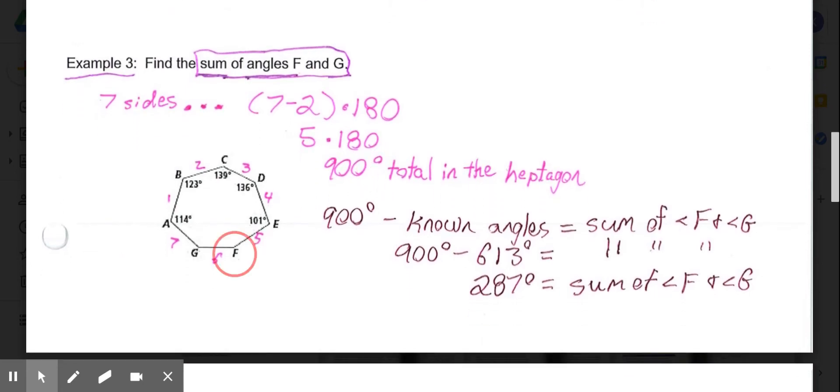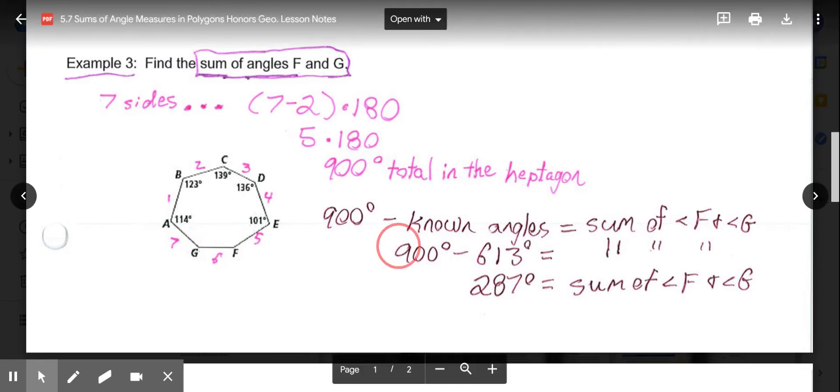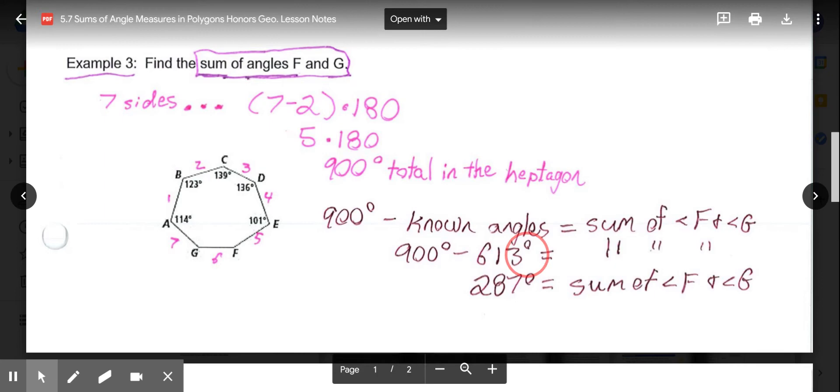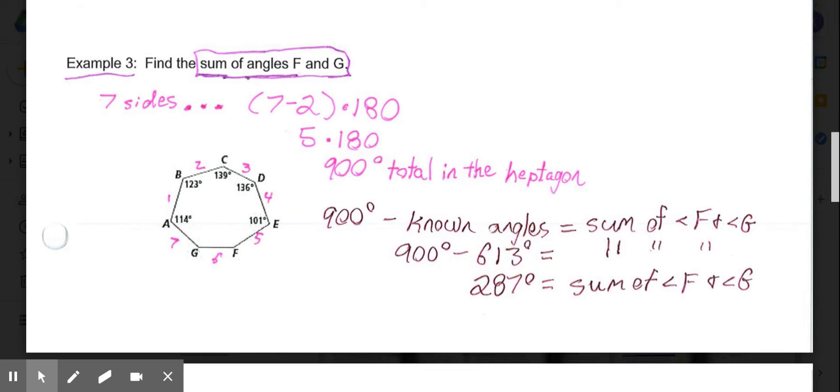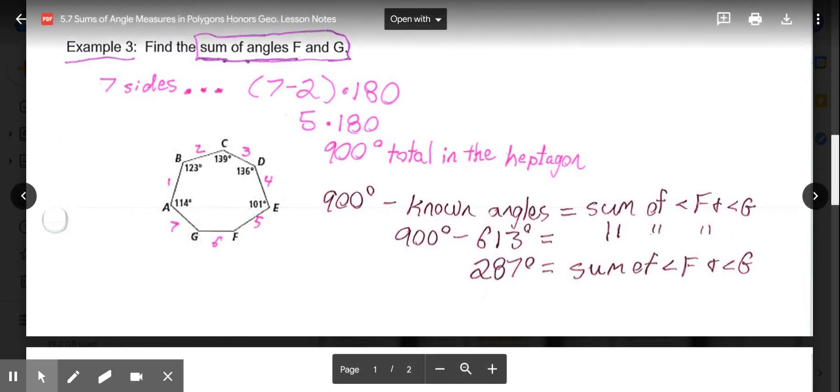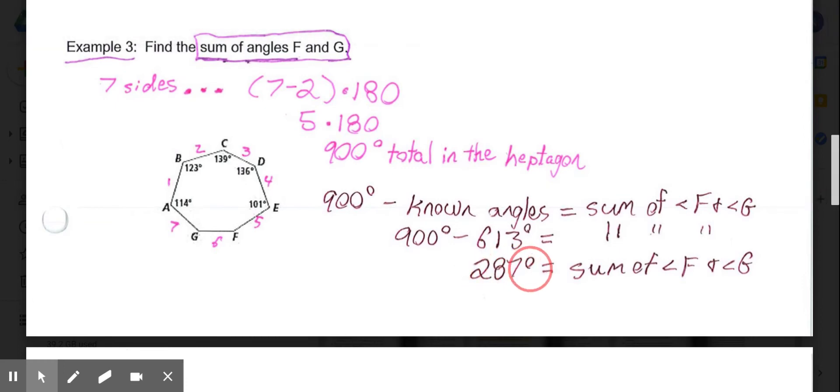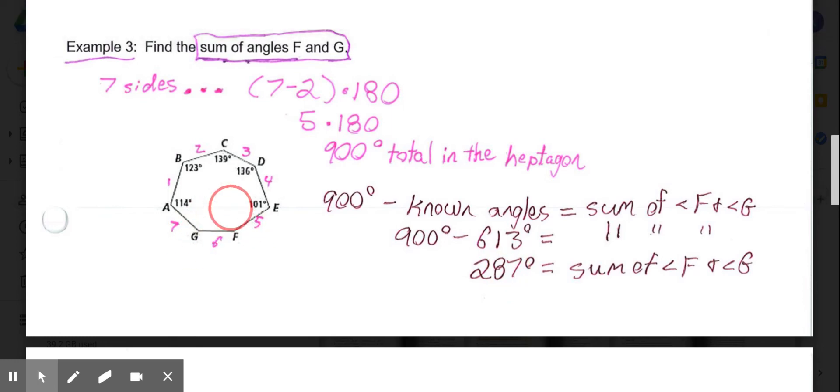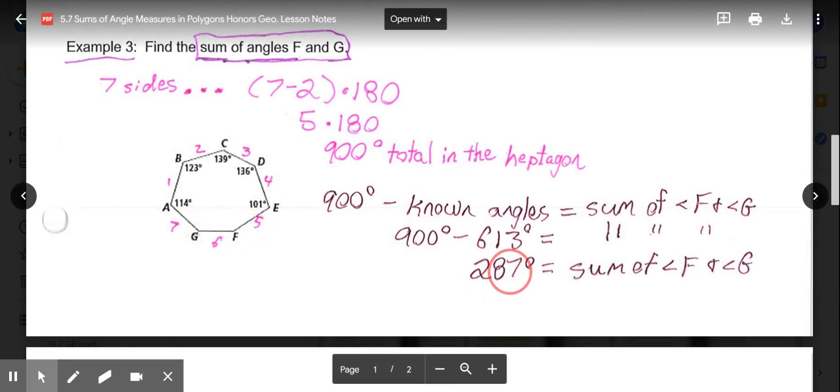I'm missing just angles F and G. If I do 900 minus all the known angles here, minus these five angle measures, which equals 613. 900 minus the 613 tells me that angle F and G have a sum of 287 degrees. I'm not sure which is which or how it's broken, but these two together is 287 degrees.